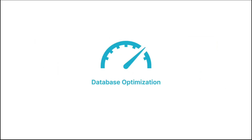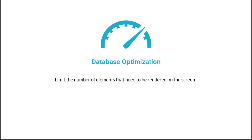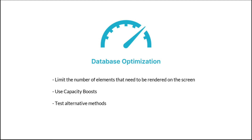The final thought is about database optimization, which basically refers to how your app performs and how quickly the UI can read data from the database. One tip is to limit the number of elements that need to be rendered on the screen. If your app has to render a lot of elements that include a lot of data, this can slow down your app — for example, if your database has 2,000 contacts it may slow down your app if you're trying to show all those contacts within a list. The second point is using capacity boosts: on Bubble you can purchase additional capacity boosts to make your app perform better. Lastly, it's always a good practice to test alternative methods — if how you currently have your app configured is not making it faster, you may want to test out alternative methods that can make your app perform better.